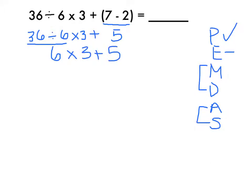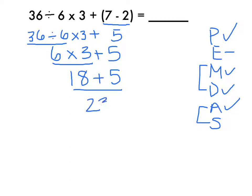Now I solve my multiplication: 6 times 3 is 18. I copy the problem, and now I'm on to addition: 18 plus 5 is 23, and that is my final answer. Thanks so much for watching. I hope you learned a little bit more about order of operations and solving problems when you need to use order of operations, including a couple of different grouping symbols.